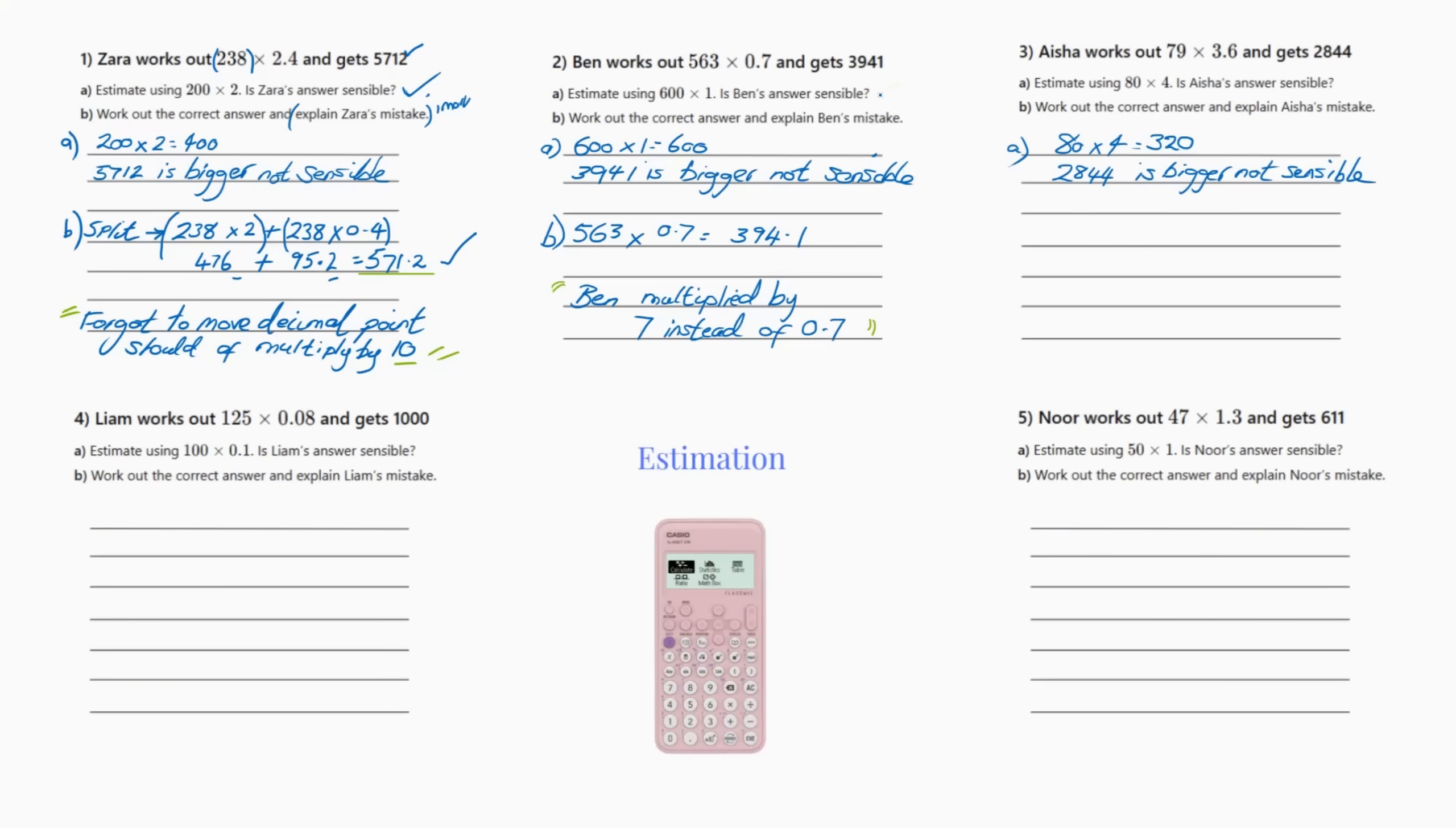So we know that it's not a sensible answer because he's actually got it 3941, so he's definitely not a sensible answer. So to work this one out I didn't need to split it because it's 0.7, so all I've done is popped it into the calculator and I get 394.1, and that's the correct answer.